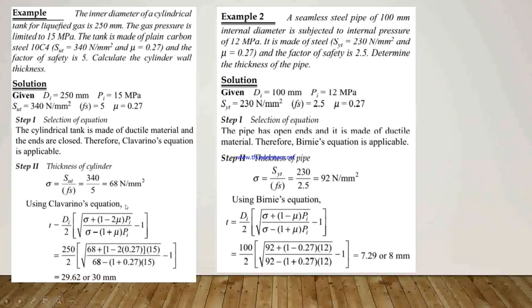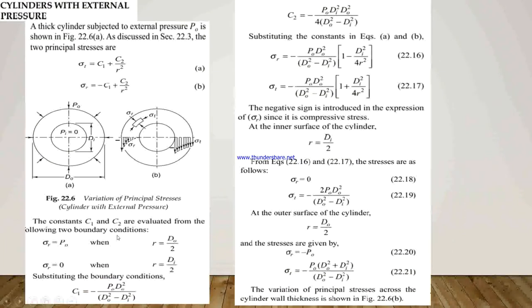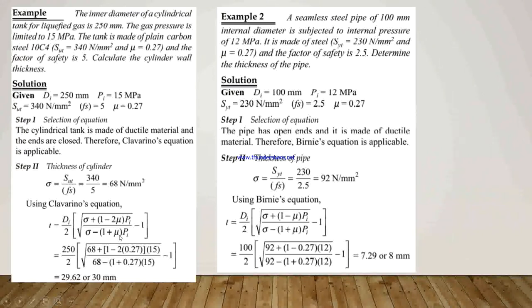Using Clavarino's equation to calculate the wall thickness, we calculate the value of t as approximately 29.62 mm, that is 30 mm.